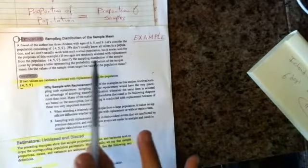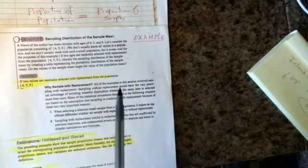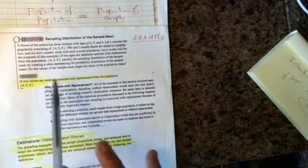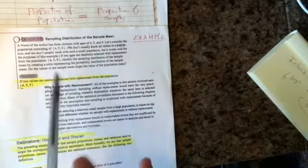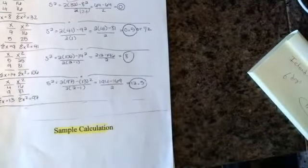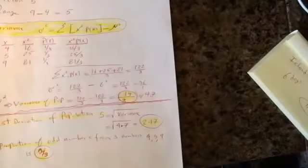Let's try something really small, otherwise it would be very complicated to do the problems. In this problem, a friend of Arthur has three children with ages four, five, and nine. Let's consider that to be your population — a population with only three numbers in it. How would you calculate mean, standard deviations, and all that?